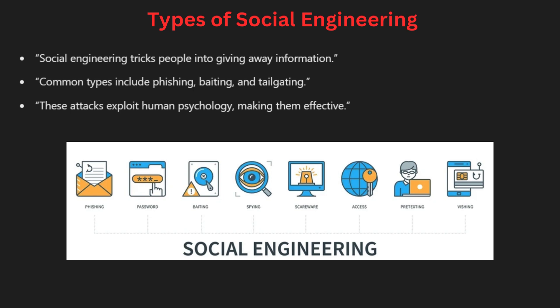Social engineering is when attackers trick people into giving away sensitive information or access. Common types include phishing, where attackers send fake emails pretending to be from trusted sources; pretexting, where they create a false scenario to steal information; and baiting, which involves offering something attractive to get users to click malicious links. Tailgating happens when someone gains physical access to a secure area by following an authorized person. These attacks focus on human psychology, making them highly dangerous.